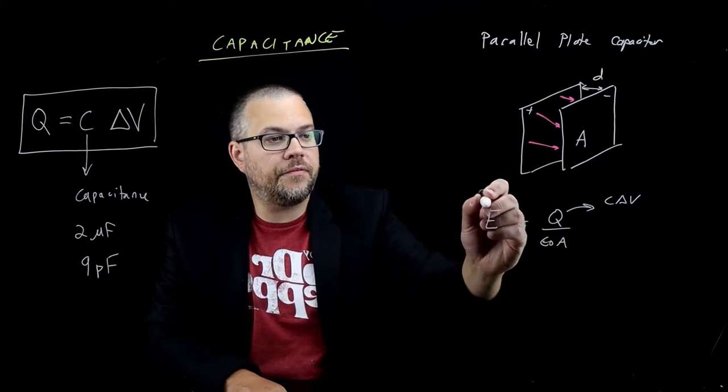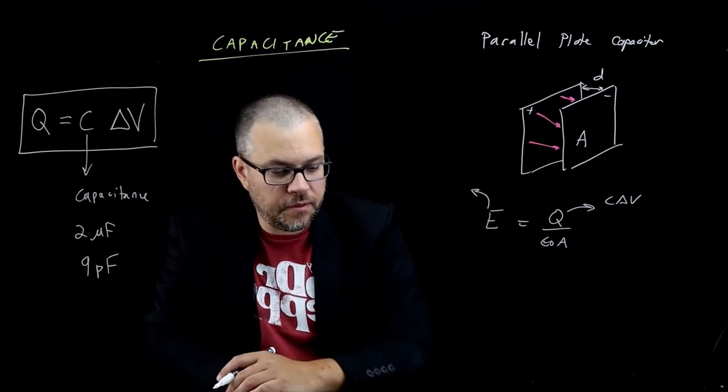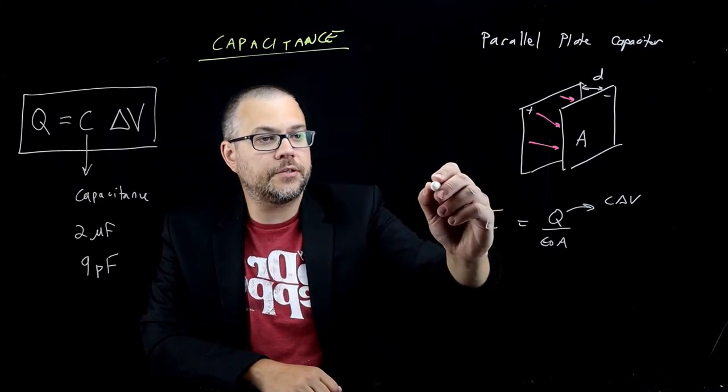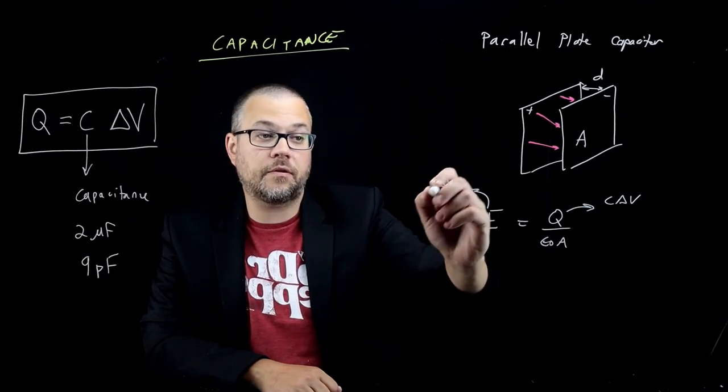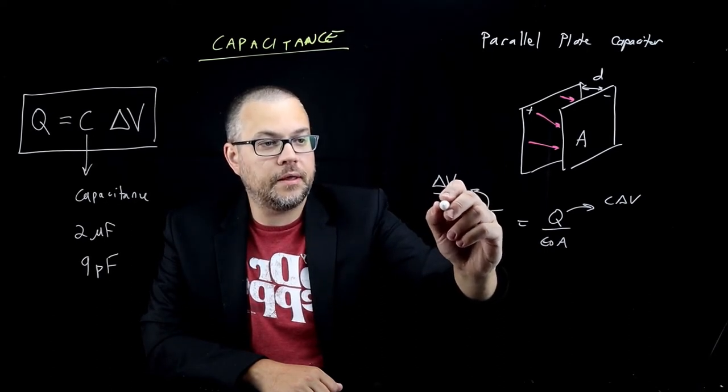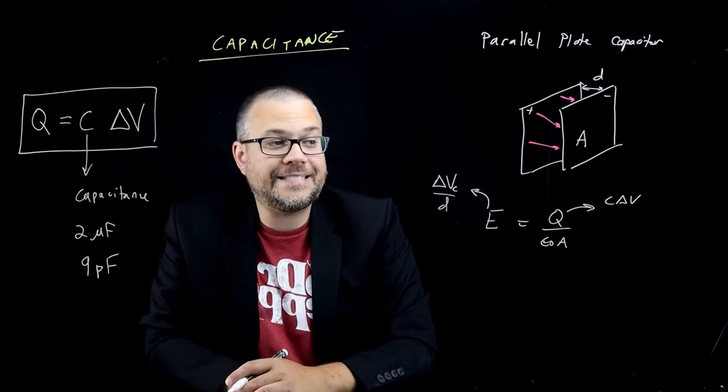On the other side with the electric field, I'm going to replace that with the potential difference, which I know for a parallel plate capacitor—the electric field is equal to delta V of the capacitor divided by the distance between the plates, D.